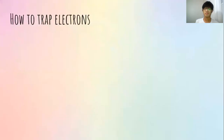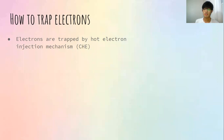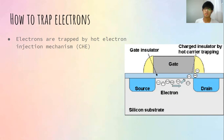So how does flash trap electrons? It uses a method called hot electron injection, which is shown on the side. A high voltage is applied between the control gate, and the source and drain also have a medium voltage. When electrons have enough energy, they migrate near the drain side, go into the insulator, and become trapped.